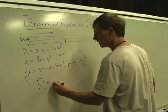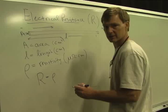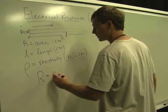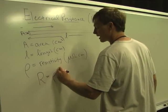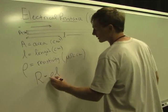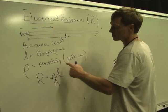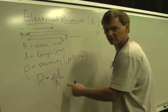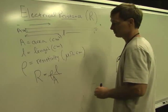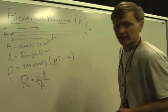Electrical resistance in a wire is equal to the resistivity of the material, which increases the resistance as it gets bigger, times the length, which increases the resistance as it gets bigger, divided by the area. Directly proportional to the resistivity in the length, inversely proportional to the area. Well, let's do an example.